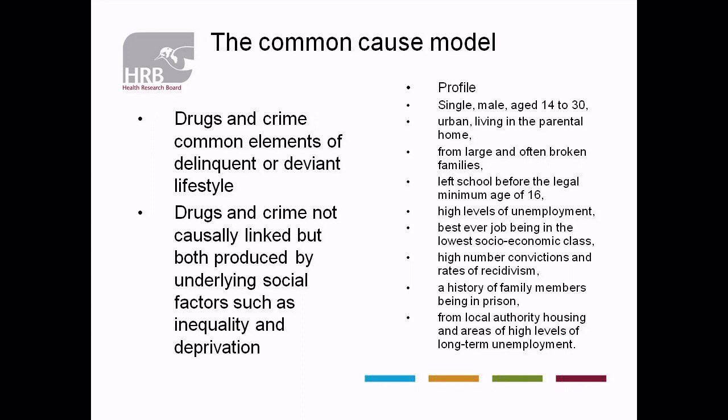Studies conducted here since the 1990s — since Paul O'Mahony conducted a major study, a sociological and criminological profile of Mountjoy prisoners — found that nothing has emerged to say this profile is any different today: most were single males aged 14 to 30, urban, living in the parental home, from large and often broken families. They left school before the minimum age of 16, were from areas with high levels of unemployment, had a high number of previous convictions and rates of recidivism, had a history of family members being in prison, and were from local authority housing and areas of high long-term unemployment. The common cause model is probably the most under-investigated model, but it is also probably the most important.